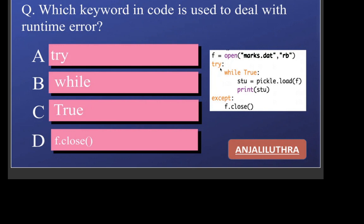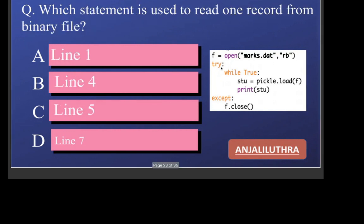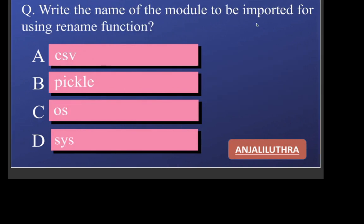The try keyword helps us deal with runtime errors — usually a runtime error terminates the program, but try will not let that happen. Which statement is used to read one record from a binary file? The correct answer is pickle.load — with pickle.load we read data from a binary file, so option b is correct. Write the name of the module to be imported for using the rename function. We use the OS module — OS stands for operating system — which contains functions like remove, rename, and replace that work on files.